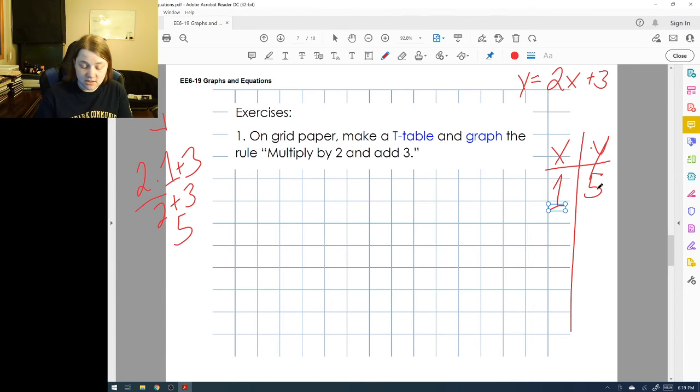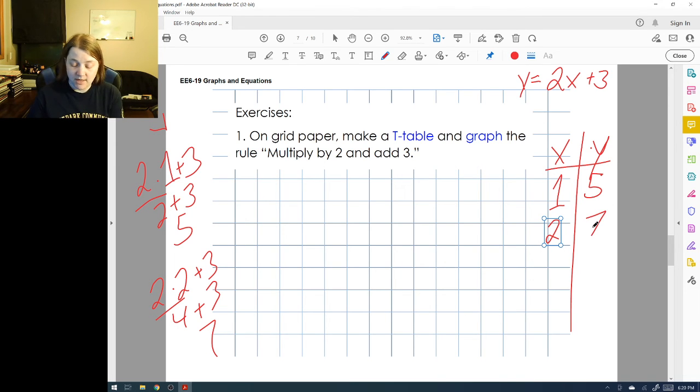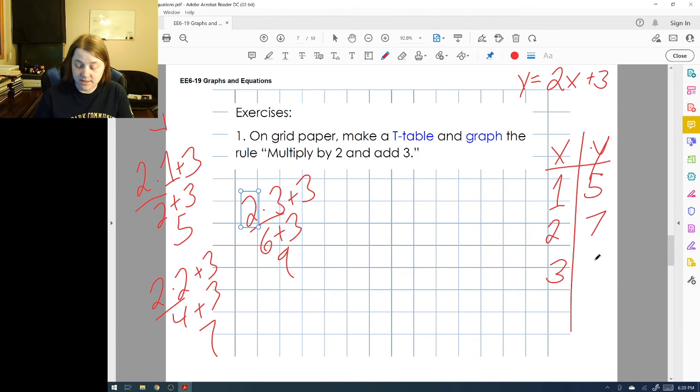What about when x is 2? Well, that's 2 times 2 plus 3. 2 times 2 is 4, plus 3 is 7. So when x is 2, y is 7. What about when x is 3, just for one more? Well, that's 2 times 3 plus 3. 2 times 3 is 6, plus 3 is 9.